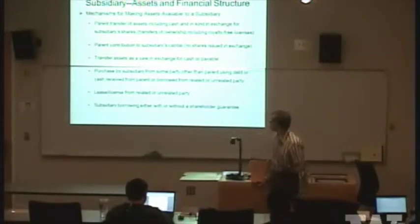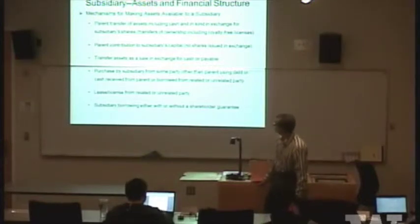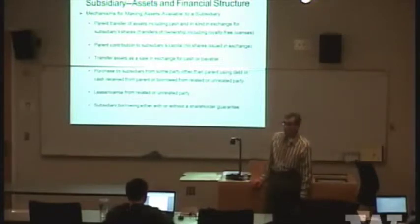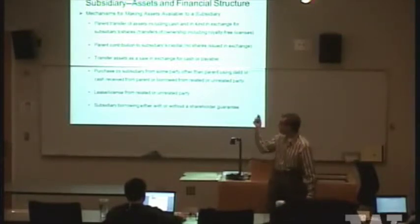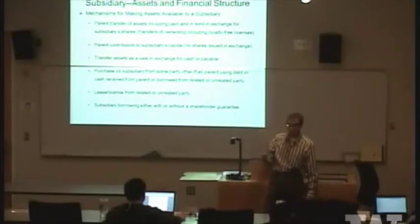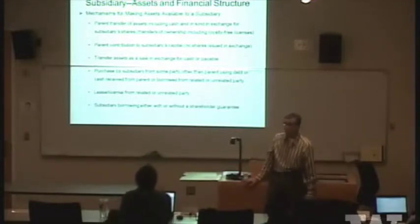The first bullet point: the parent could transfer assets, whether cash or in-kind assets. In-kind means an asset other than cash. It could be transferred in exchange for shares — it could be tables, machinery, intellectual property, could be anything.